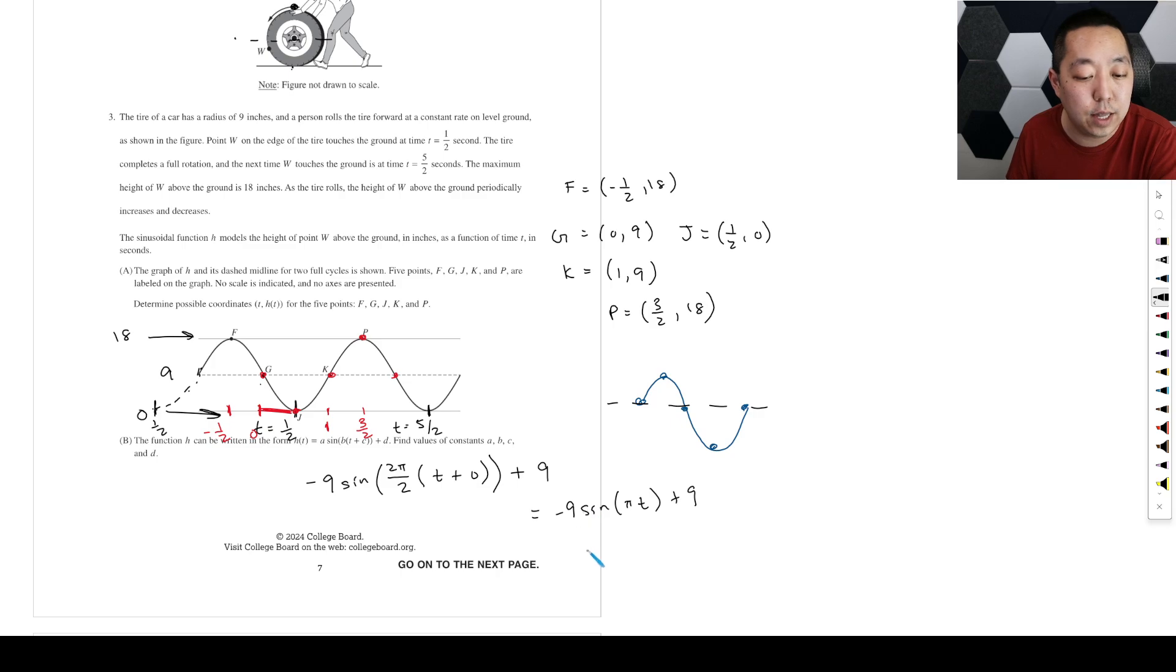And then that means the constant A is negative nine. B is pi. And then C is zero and D is nine.